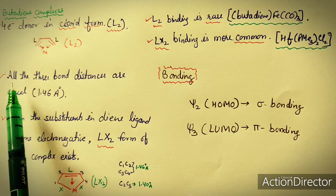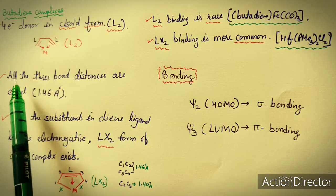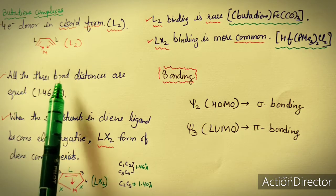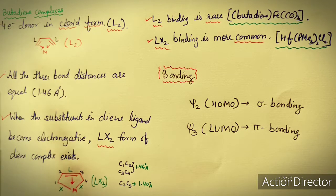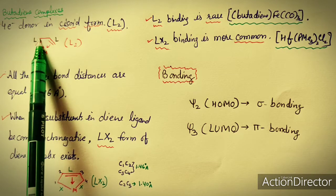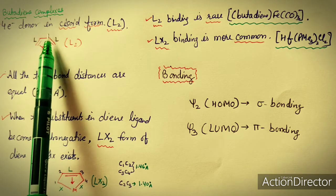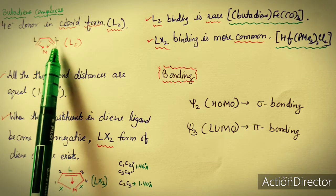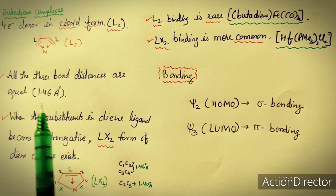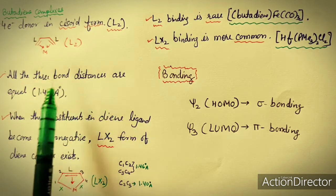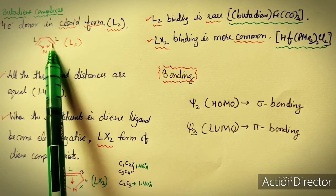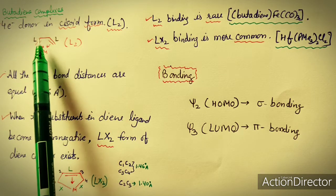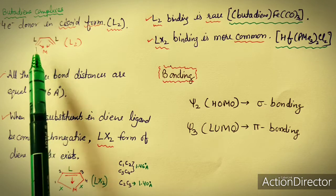In butadiene, all three bond distances — C1–C2, C2–C3, and C3–C4 — are equal because the pi electrons are delocalized.